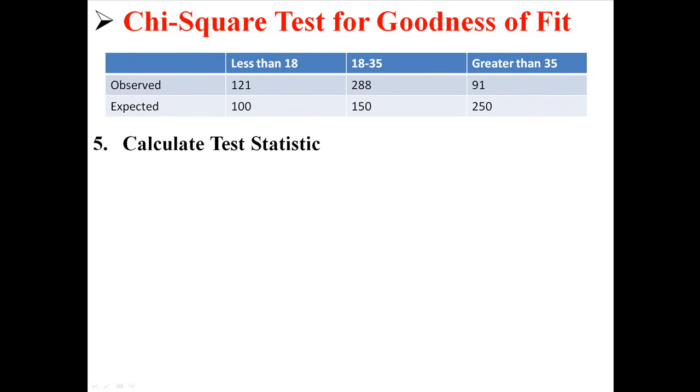Calculating the test statistic for a chi-square is actually not that bad. It follows this equation right here, where we take every observed minus expected, square it, divide by expected, and then add everything together.